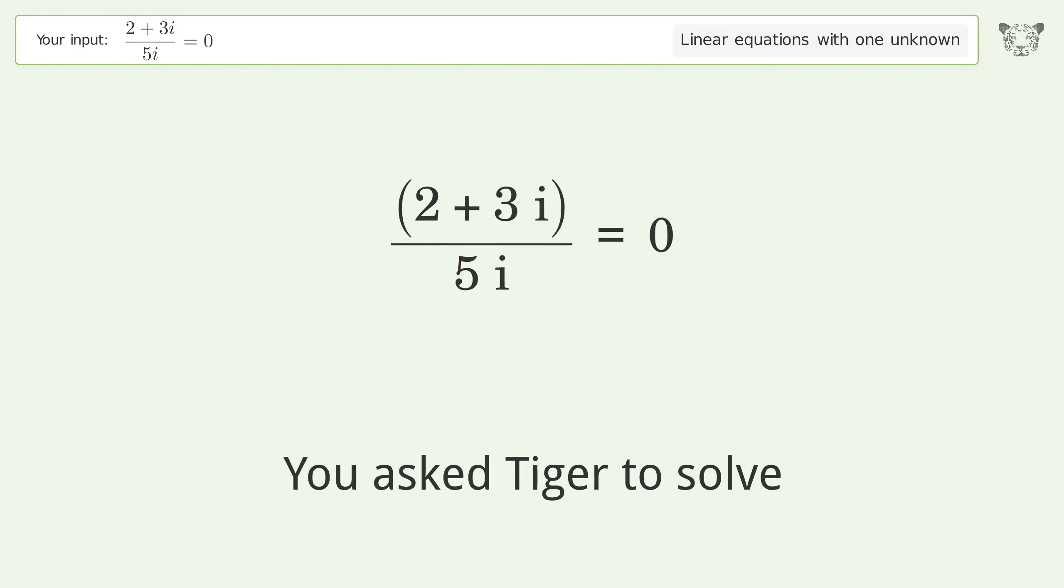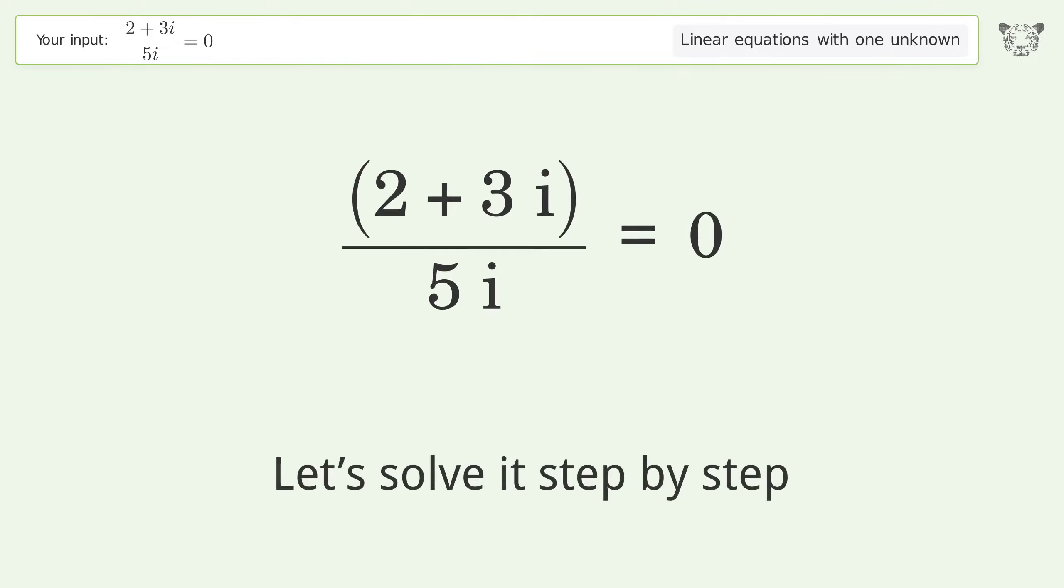You asked Tiger to solve this equation dealing with linear equations with one unknown. The final result is i equals negative 2 over 3. Let's solve it step by step.